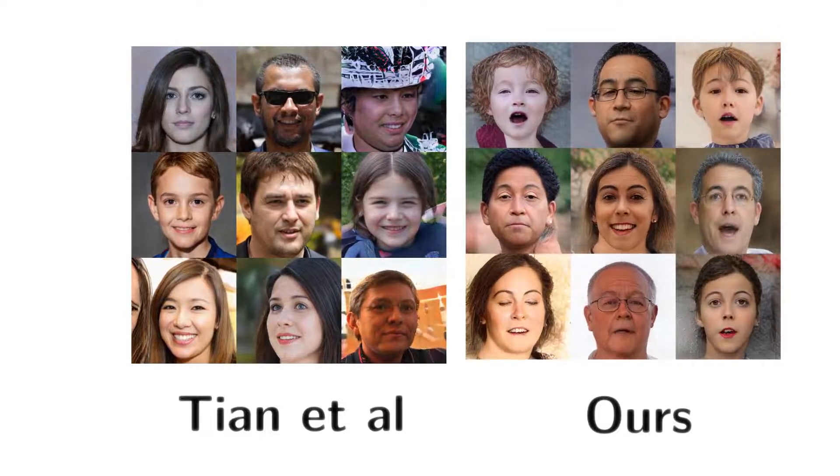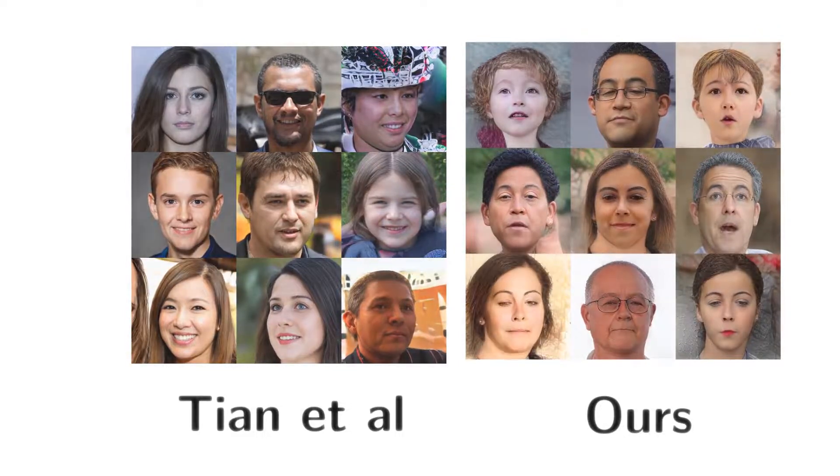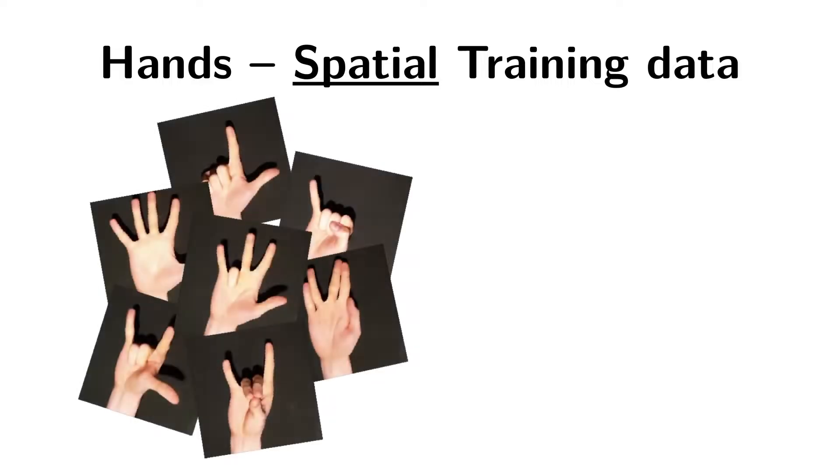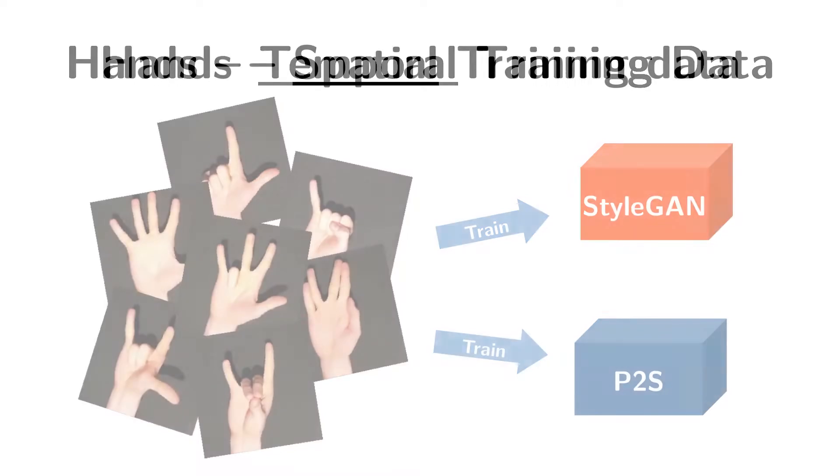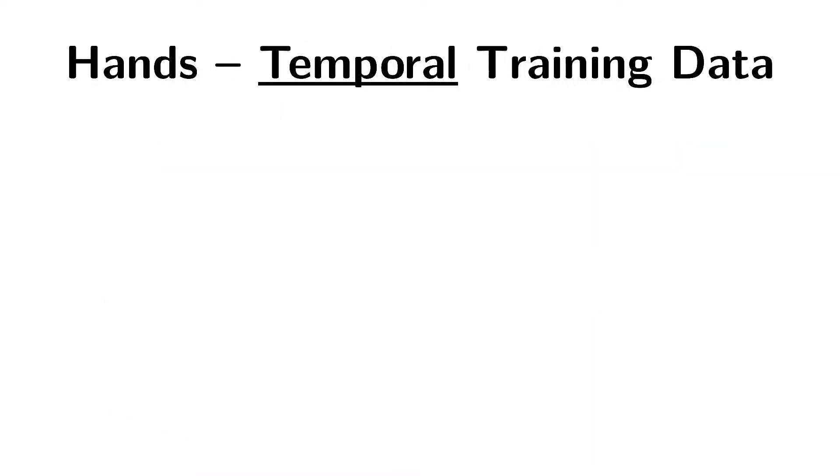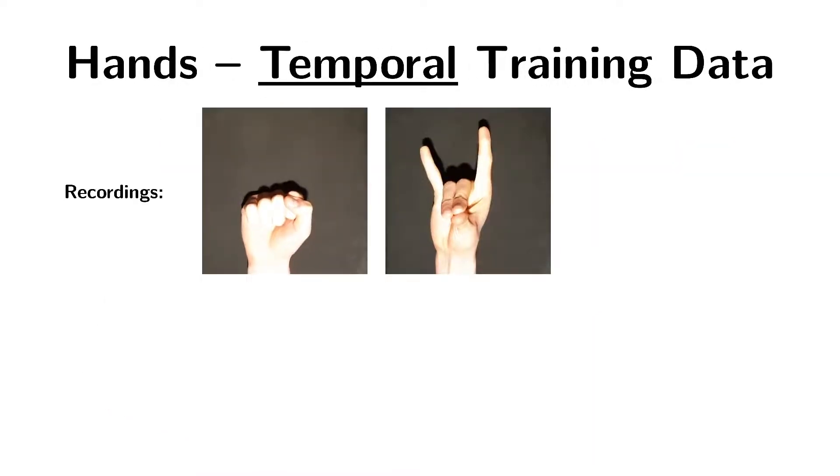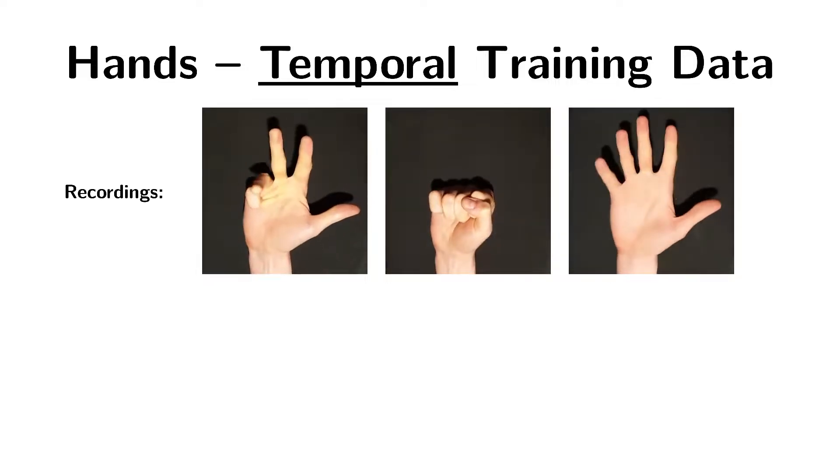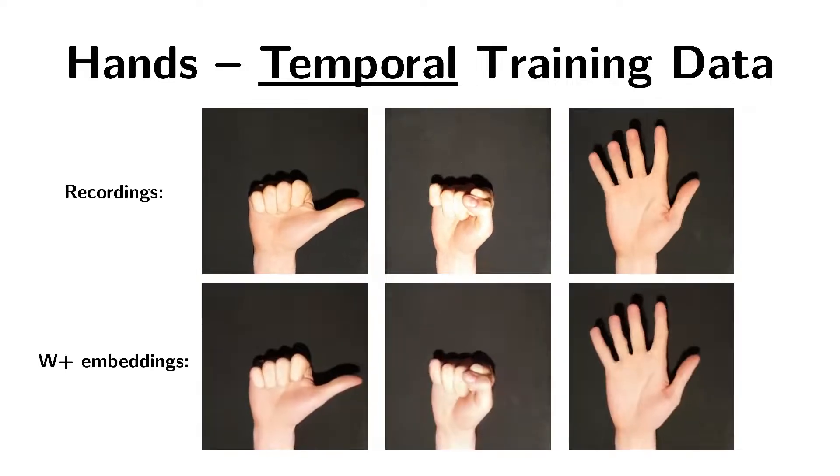As a proof of concept for the possibility to apply our method to content categories other than faces, we have also applied it to hand videos. For this purpose, we recorded around 100,000 video frames of a hand, which we then used to train a StyleGAN model and a corresponding inverter model. To train our temporal architecture, we used three additional sequences, each about five minutes long. Each of these sequences can be embedded in the latent space of our StyleGAN model with high precision.